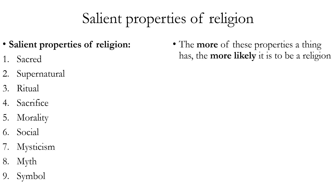Here is a list of the salient properties of religion. This list probably won't be agreed upon by everyone because of the family resemblance nature of religion — you could add or subtract a few properties and it would still be a reasonable attempt at a definition. The properties are: sacred, supernatural, ritual, sacrifice, morality, social, mysticism, myth, and symbol. The more of these properties a thing has, the more it counts as a religion — it's a matter of degree.